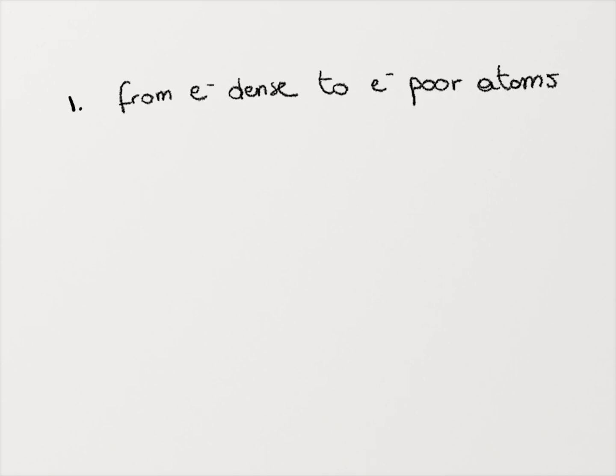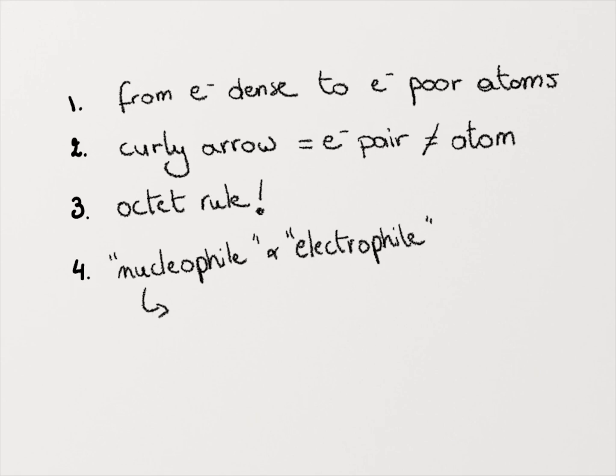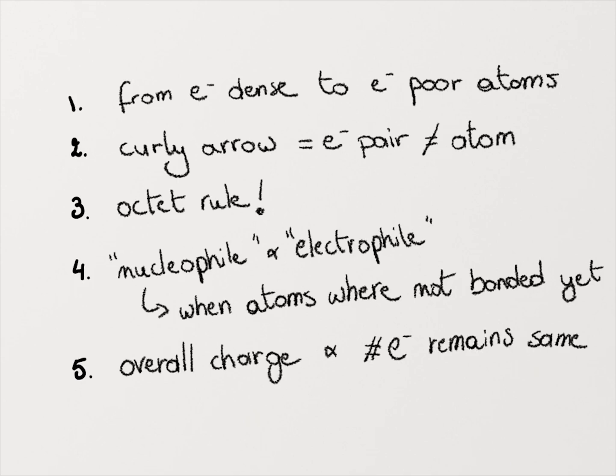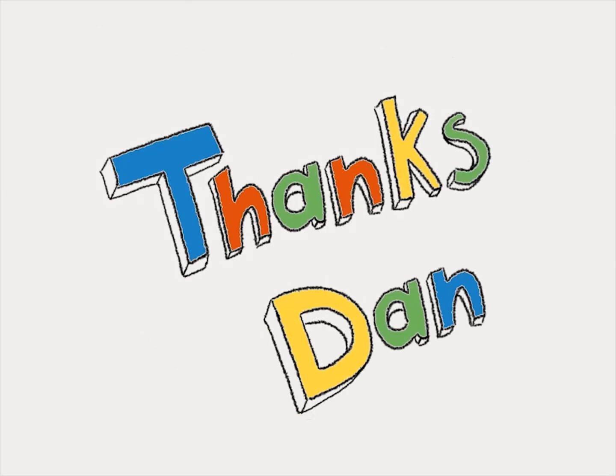Okay, thanks Dan, that's super clear. I think I've learned a couple of points. First of all, arrow pushing is a chain that flows from electron-dense atoms to electron-poor atoms. A curly arrow is the movement of a pair of electrons, and it's not the movement of a single atom. Third, you have to make sure that you don't break the octet rule. If you form a bond, you need to break a bond. And then the terms electrophile and nucleophile only apply for atoms which were not previously bonded. And then lastly, no charges or electrons are harmed during the process. The overall number of electrons along the chain remains the same, and no overall change in formal charge occurs. You got it!